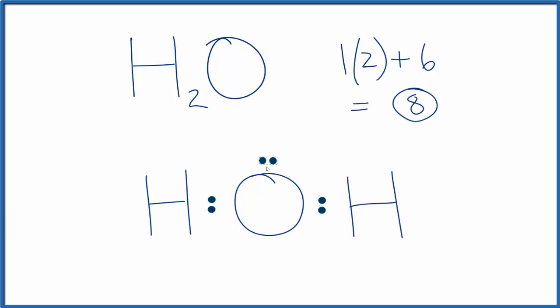Put two more on top and underneath. And the oxygen, that has eight valence electrons. That's an octet. That's very stable.